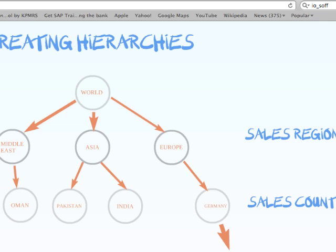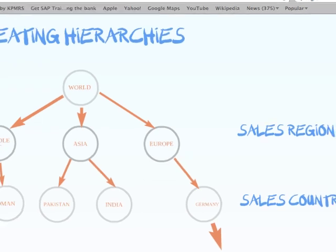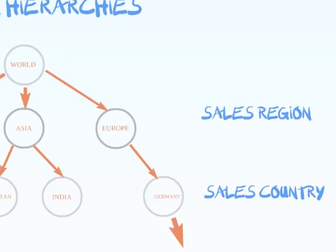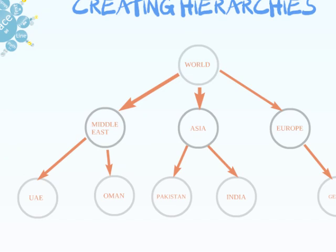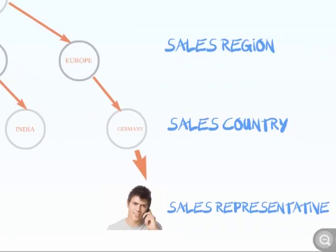Under each of those nodes, each of them have different nodes as well. We also have the sales country node. Under the Middle East we have UAE and Oman. Under Asia we have Pakistan and India. And under Europe we have Germany. Our sales representative, let's call him John Smith, is a German and he's organized under the sales country Germany and under the sales region Europe.